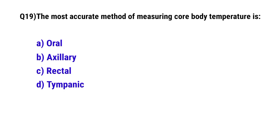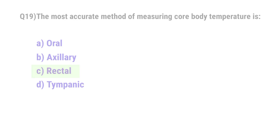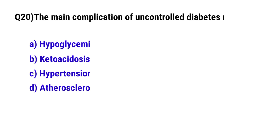Question No. 19. The most accurate method for measuring core body temperature is? The correct option is C: Rectal.